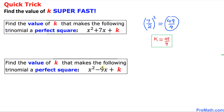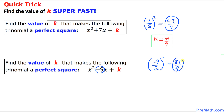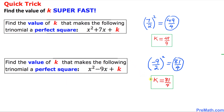Here is our next example. Let's focus on the middle number, the coefficient of x, which is negative 9, always divided by 2. And then we square it — negative 9 squared is going to be 81, and 2 squared is going to be 4, giving us 81 over 4. Thus k equals 81 over 4 is our final answer.